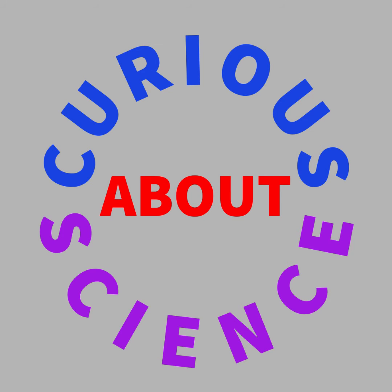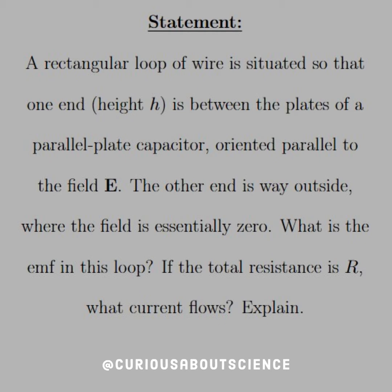Now that we're talking more about EMF and how they are with the forces, let's consider this next question. A rectangular loop of wire is situated so that one end, height H, is between the plates of a parallel plate capacitor, oriented parallel to the field E. The other end is way outside, where the field is essentially zero. What is the EMF in this loop? If the total resistance is R, what current flows?